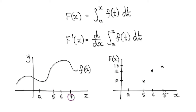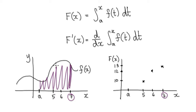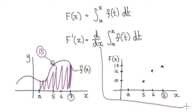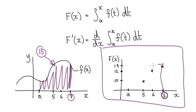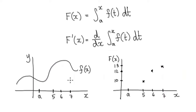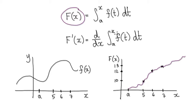Now let's jump to x equals 7. The whole area from a to 7 — let's imagine it's 13. So on this graph we plot it at 13. When we plot the area function, it will look something like this. And when x is at a, there is no area, so the area is 0.